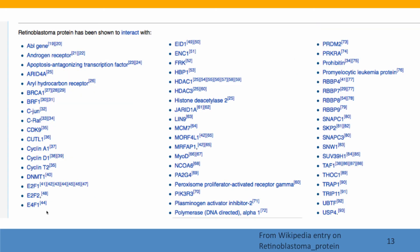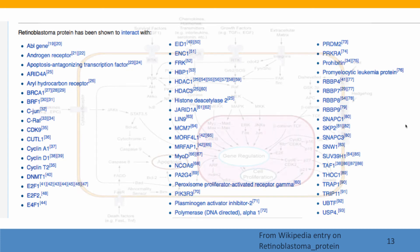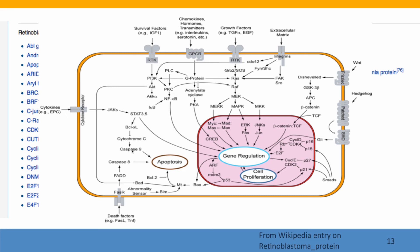The retinoblastoma protein has a lot of tasks — it regulates aspects of cell growth and division in many different cell types and has been found to interact with about 60 proteins. Here's a diagram showing all of the interactions that are influenced by the retinoblastoma protein. This is another example of the kind of gene network that explains why every genetic difference affects many different phenotypic differences.